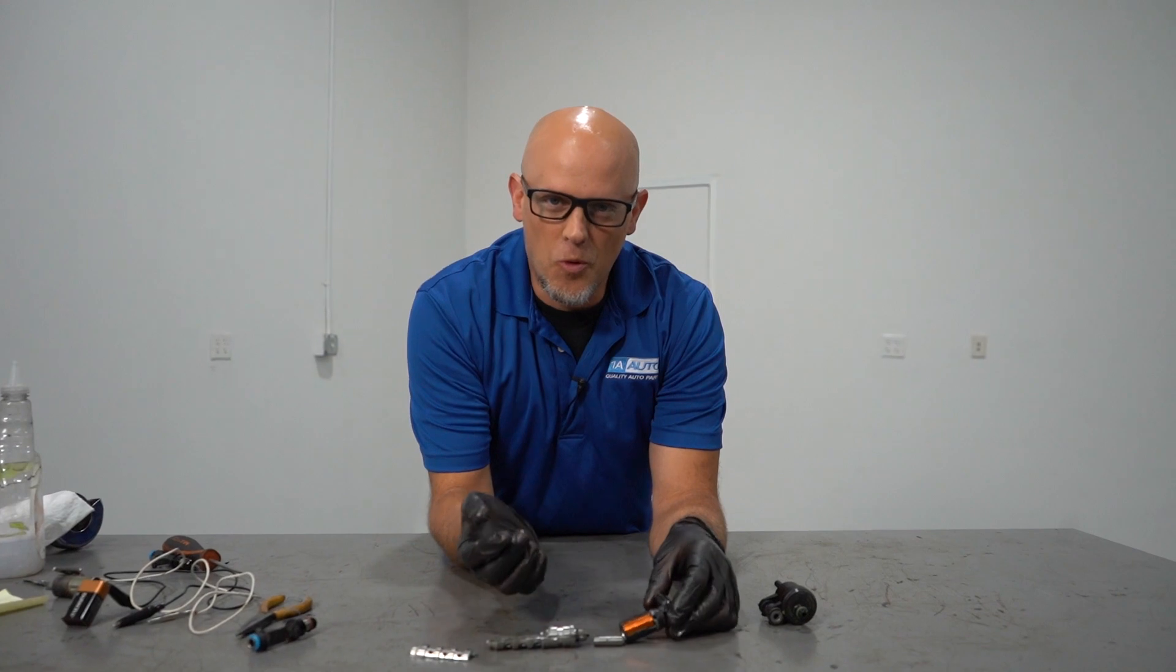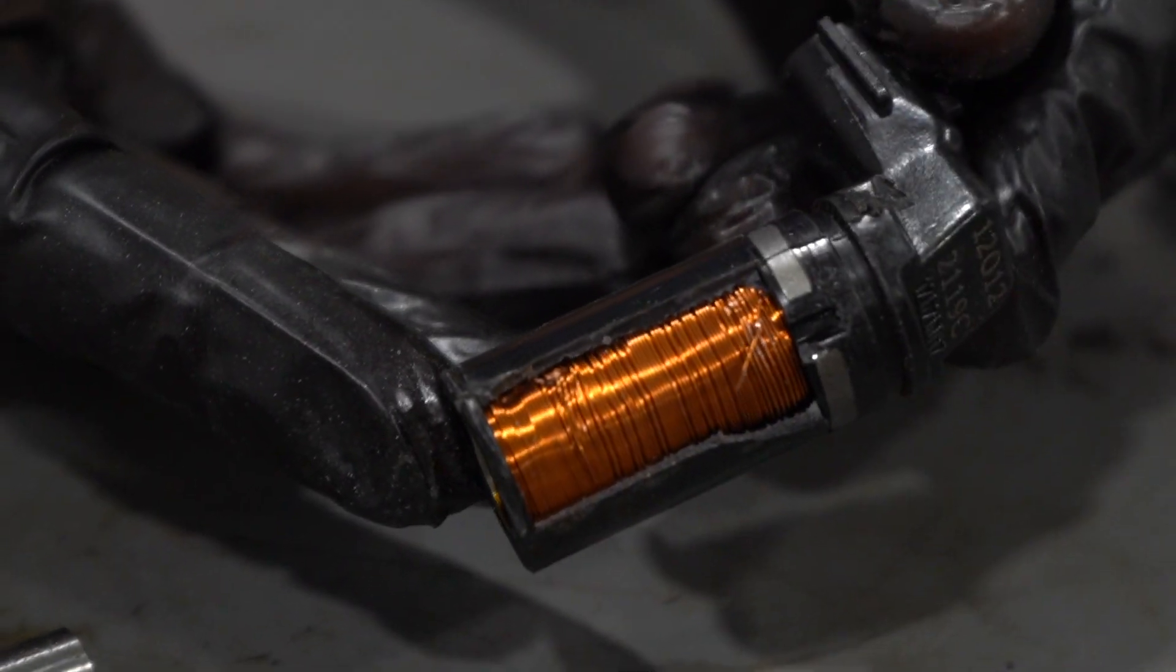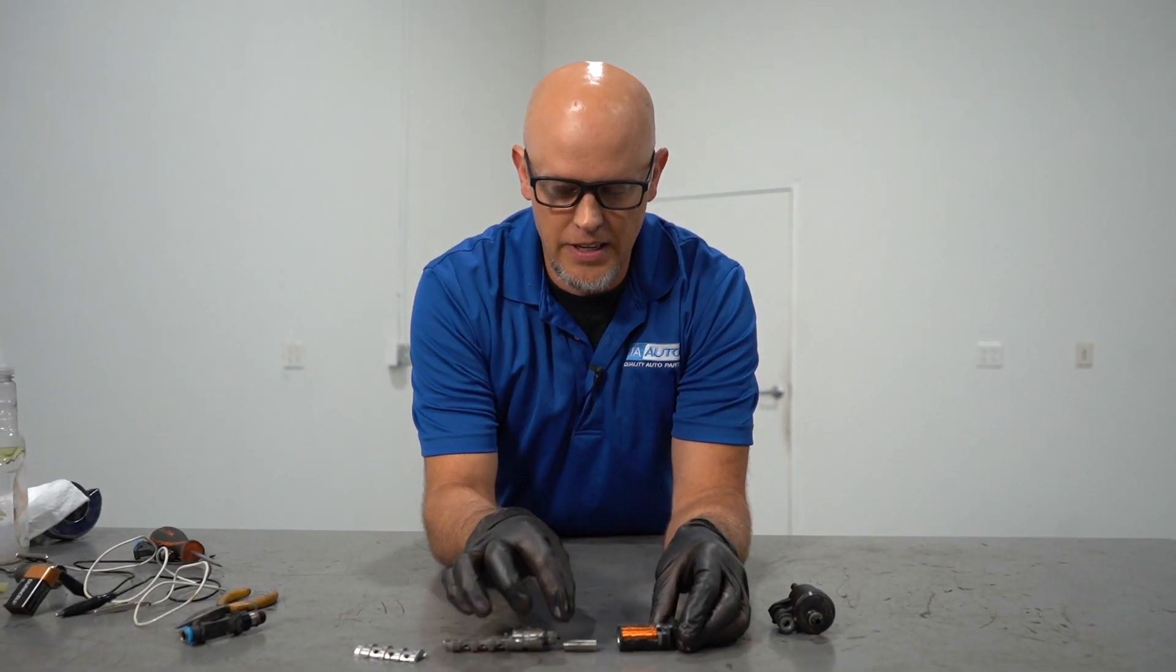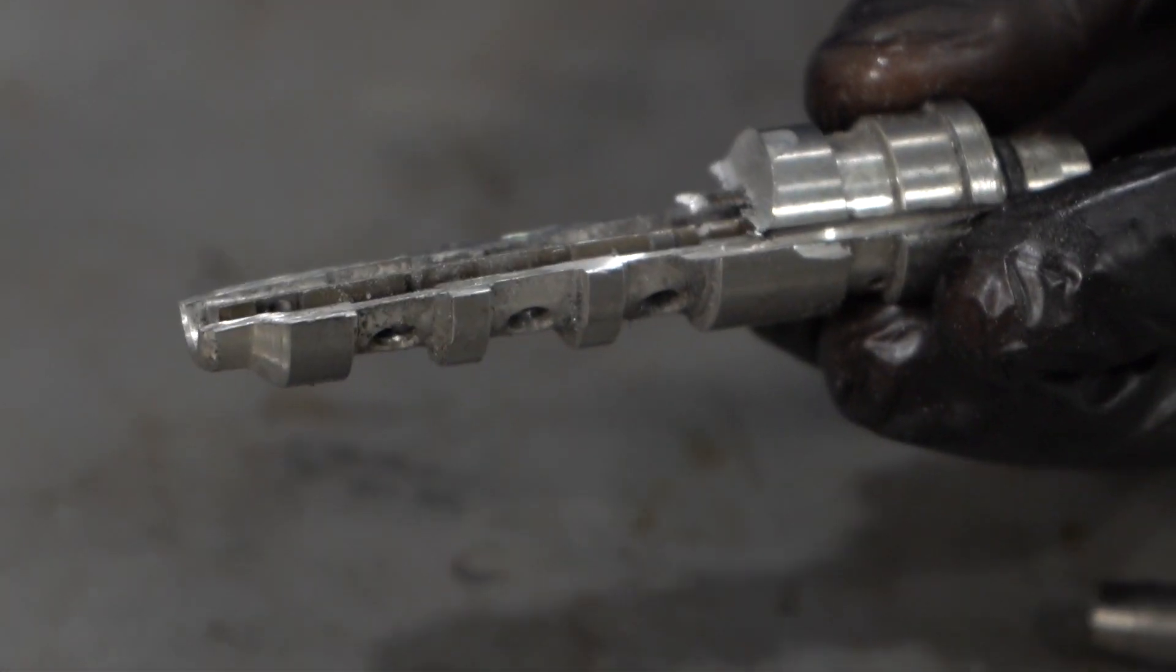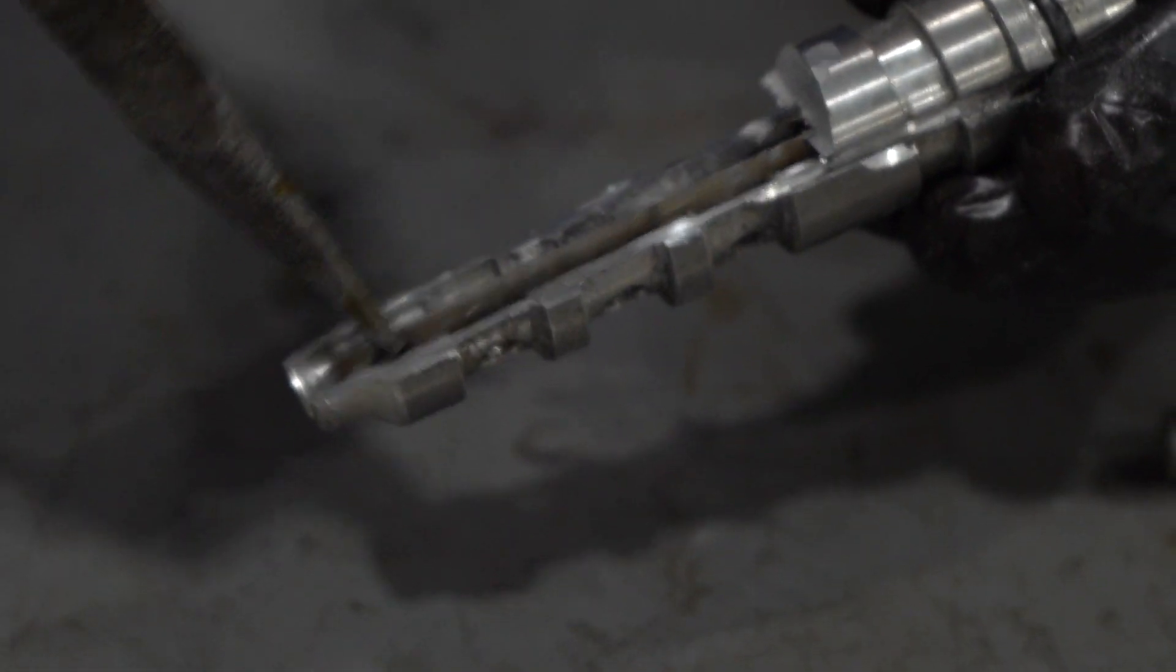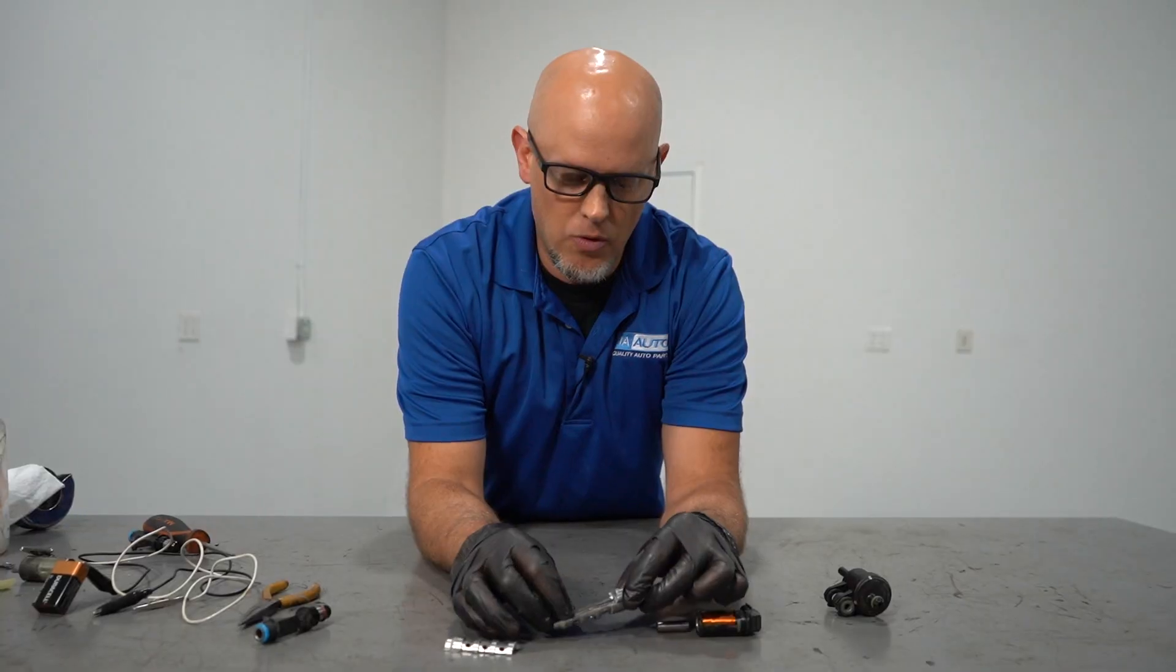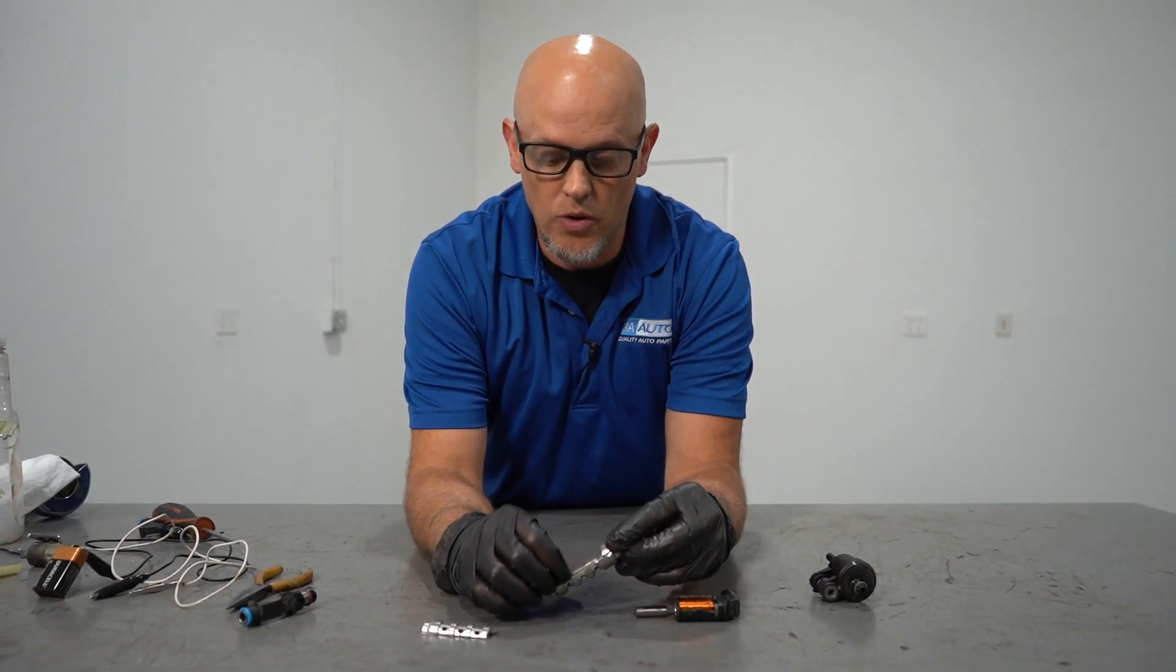So I took this apart even more so you could see how it works. So we have the coils, the coil windings, and that's where the electromagnet comes into play. Then the piston, which you saw. And then on this VVT solenoid, you can see where the oil goes and where the valve gets changed. When that piston moves back and forth, it's going to change the direction or the flow of the oil pressure.